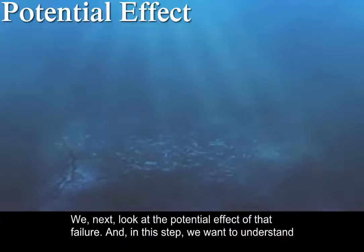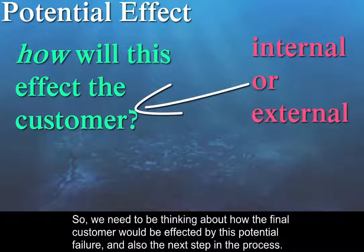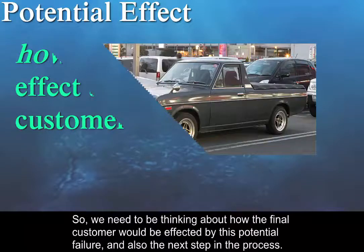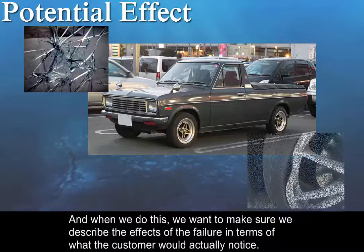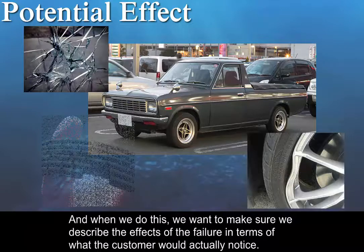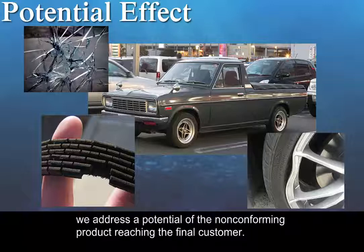We next look at the potential effect of that failure. In this step we want to understand how the failure is going to affect the user or the customer, and this could be an internal or an external customer. We need to be thinking about how the final customer would be affected by this potential failure, and also the next step in the process. When we do this, we want to make sure that we describe the effects of the failure in terms of what the customer would actually notice, addressing the potential of the non-conforming product reaching the final customer.